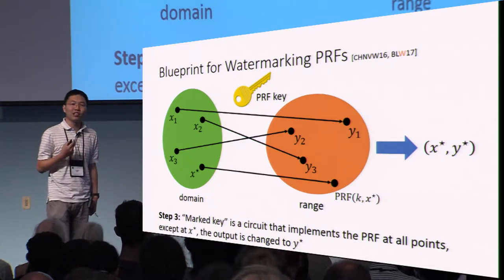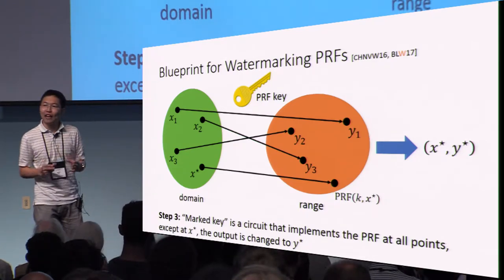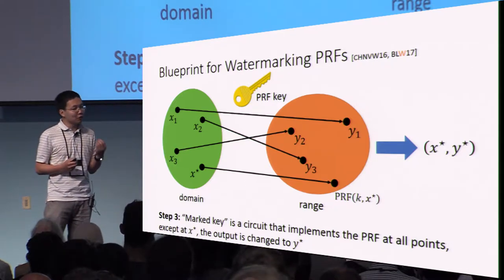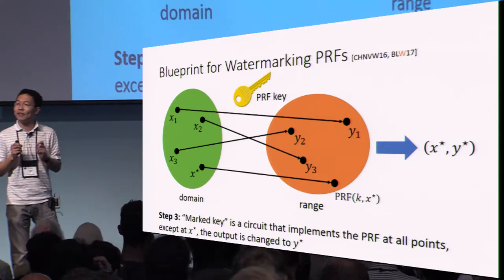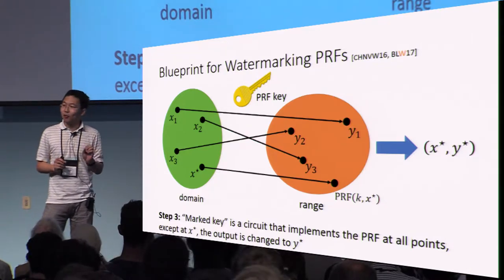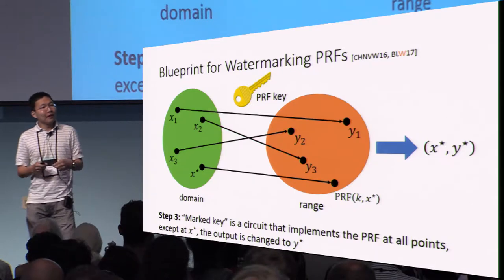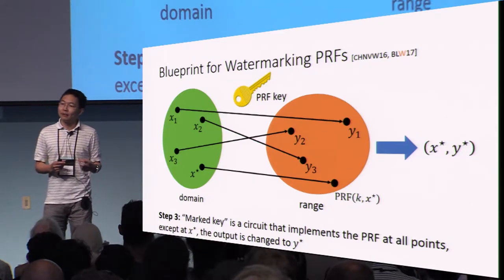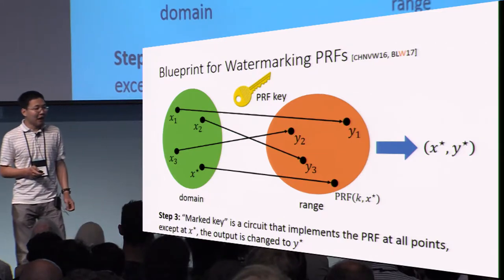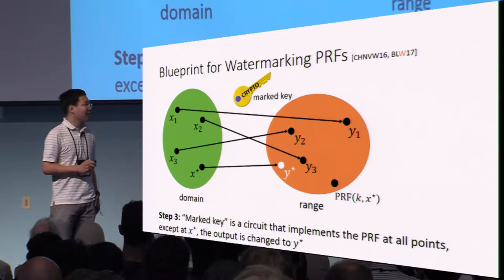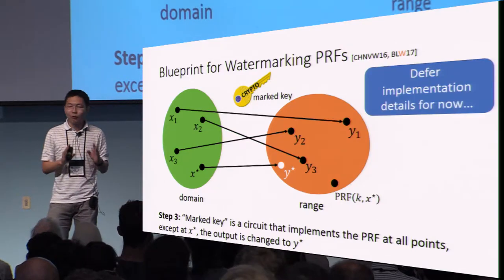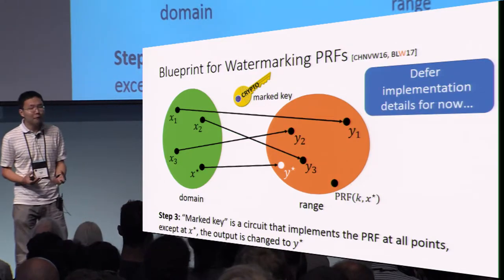When we construct the watermark key, let me give you an abstract schema of the function we want to capture. The marked key is going to be a program that implements the real PRF evaluation at all points except this special point x*. The marked key is a new program that implements the same function as the PRF everywhere except the single point x*, and we're just going to rewire the value at x* to the value y*. Let's defer the implementation details for now.